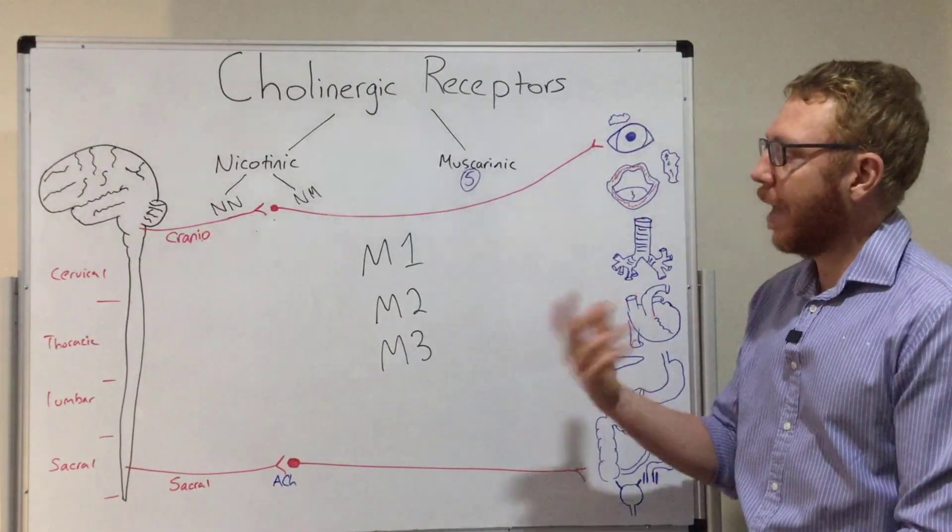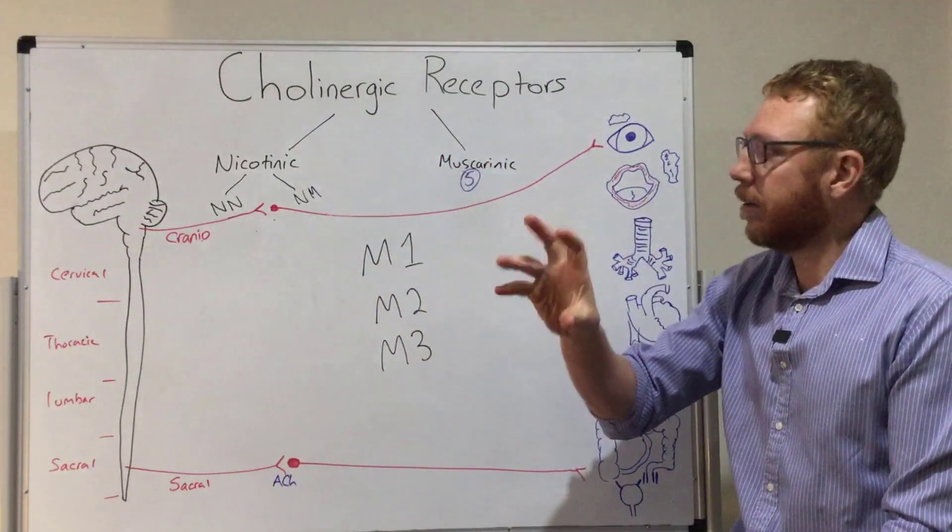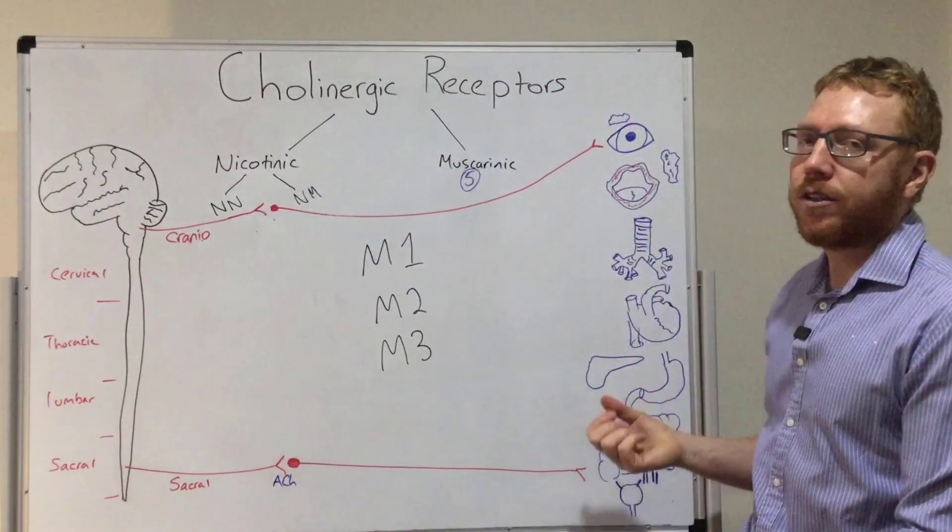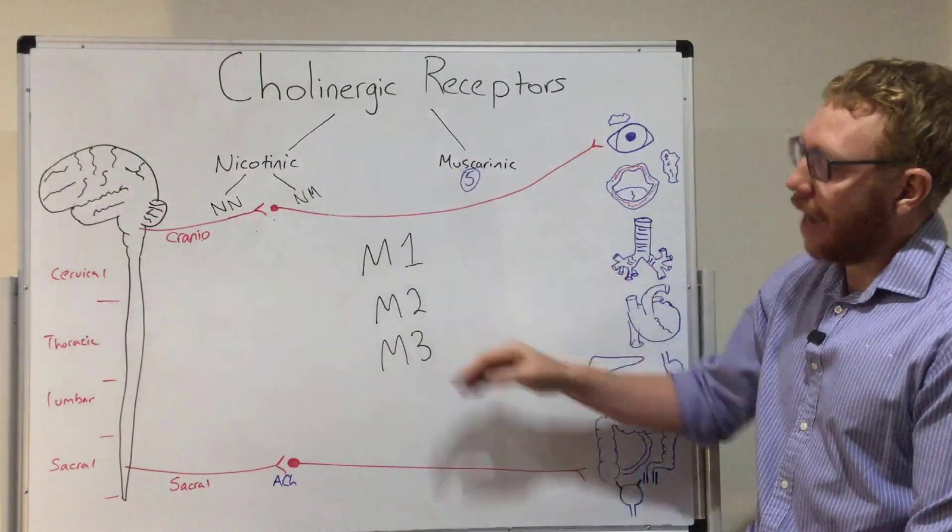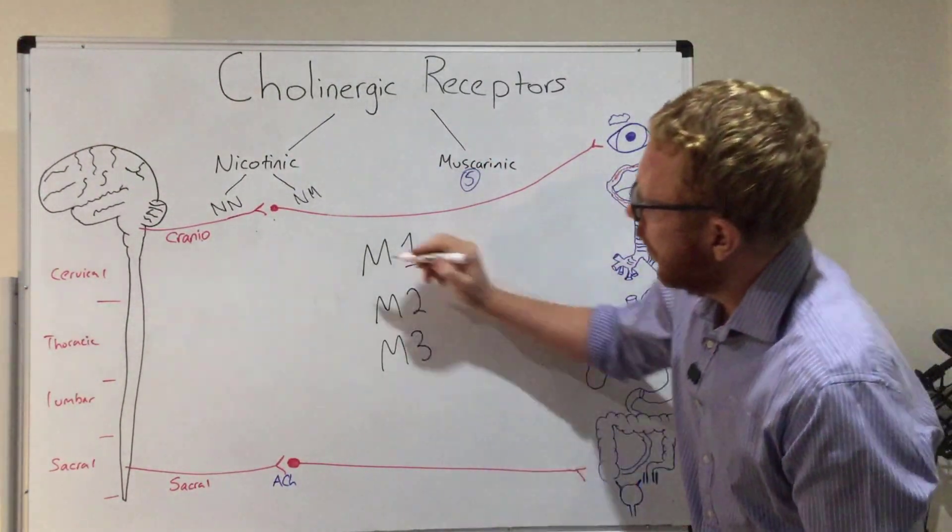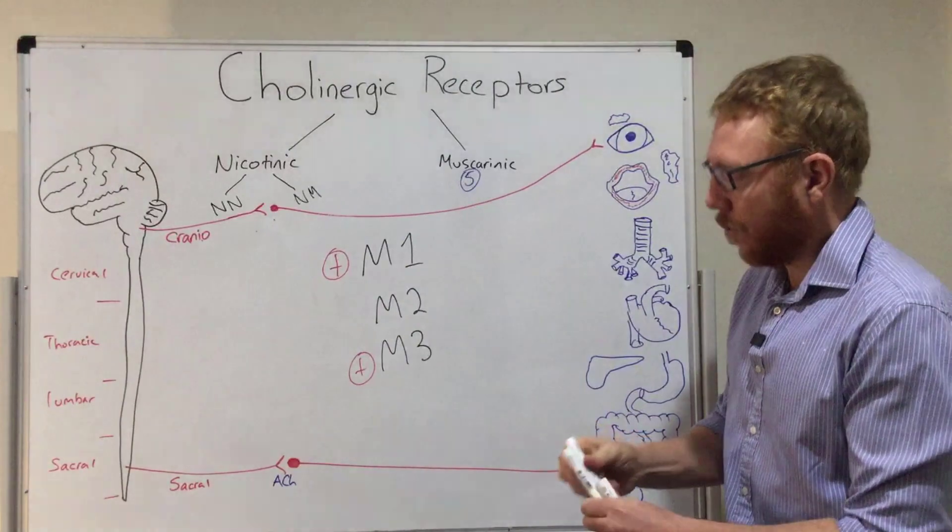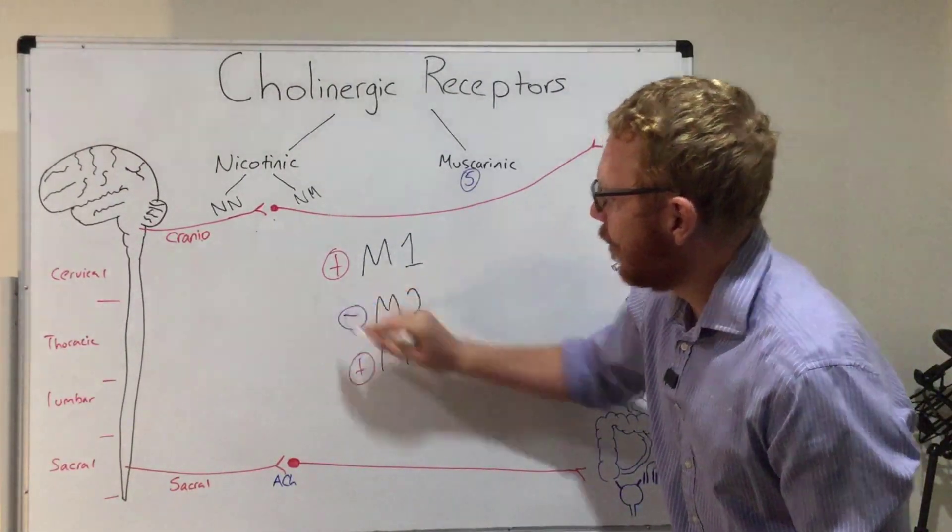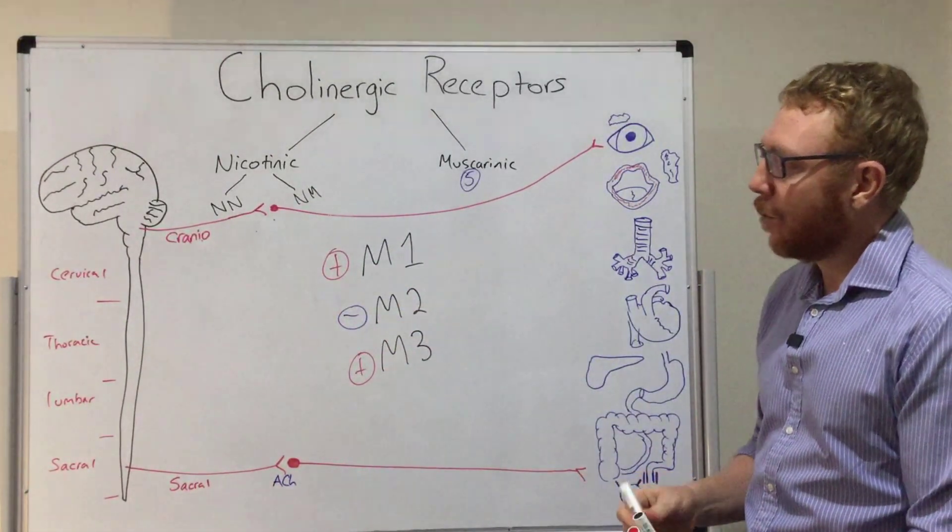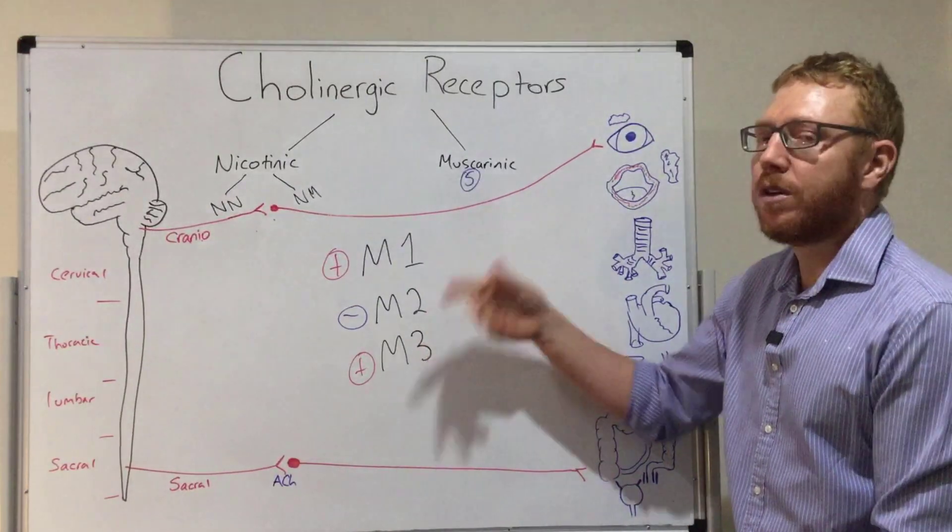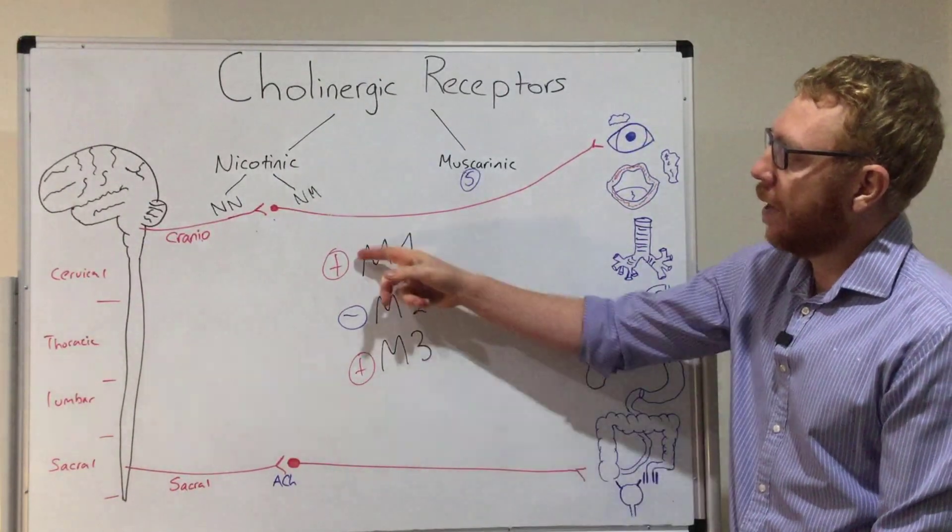Remember with Michael's video on adrenergic, he spoke about how alpha 1, beta 1 are stimulate - they stimulate whatever organ they bind to, whereas beta 2 and alpha 2 actually inhibit. Well for muscarinic, the same thing happens. What we see here is M1 is a stimulator, whilst M3 and M1 are stimulators, M2 is an inhibitor. So basically when ACH binds to M2, the result is inhibition, whereas when ACH binds to M1 and M3, we're going to get activation.